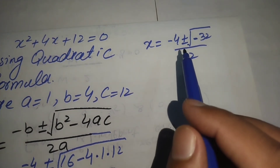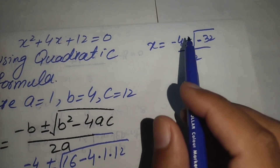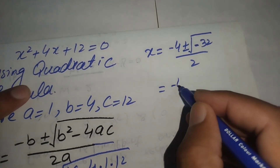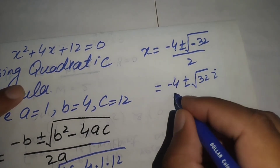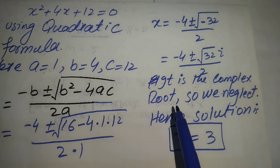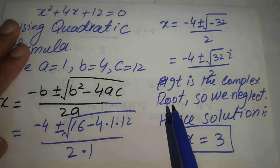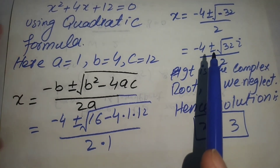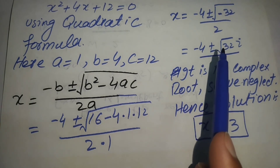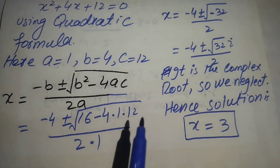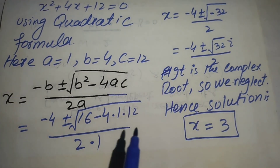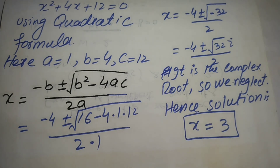We can see there is a negative sign under the square root, which means these are complex roots. Since we are looking for real or integer roots only, we neglect these complex solutions. Therefore, the only real solution of the given equation is x = 3. Thank you so much for watching — please like and subscribe!